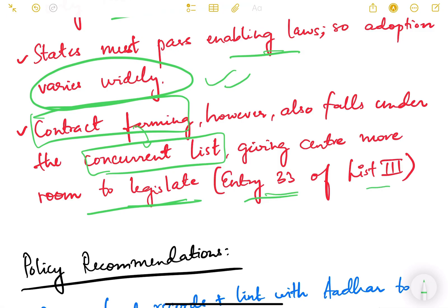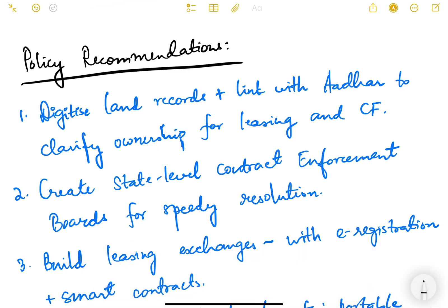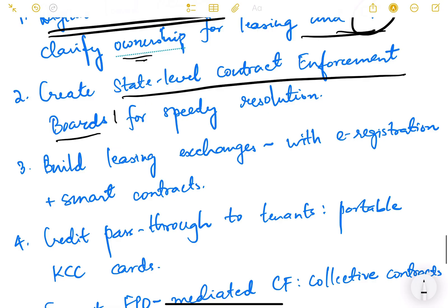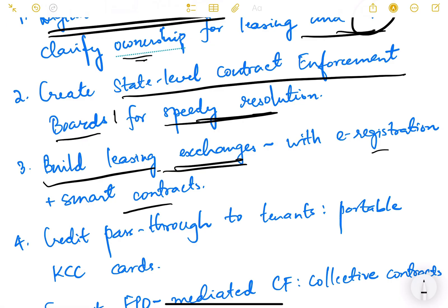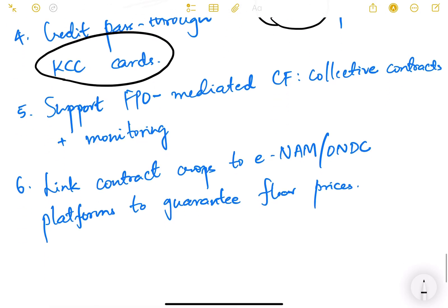Policy recommendations include: first, digitize land records and link them with Aadhaar to clarify ownership for leasing and contract farming. Second, create state-level contract enforcement boards for speedy dispute resolution. Third, build leasing exchanges with e-registration and smart contracts. Fourth, ensure credit pass-through to tenants via a portable Kisan Credit Card.